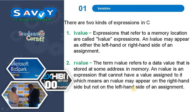Now there are two kinds of expressions in C: L-value and R-value. Expressions that refer to a memory location are called L-value expressions. An L-value may appear on either the left-hand or right-hand side of an assignment. The term R-value refers to a data value that is stored at some address in memory. An R-value is an expression that cannot have a value assigned to it — it may appear on the right-hand side but not the left-hand side of an assignment.